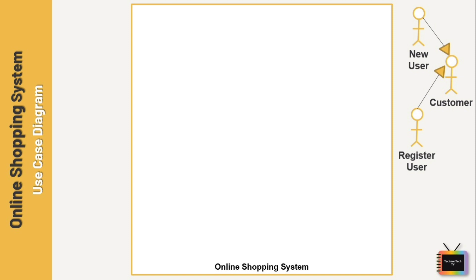New users are those who identify themselves for the first time on a particular website or app. A registered user is someone who has previously registered on the website or app. Registered users normally provide some sort of credentials to the system to prove their identity. I have added both types of customers.